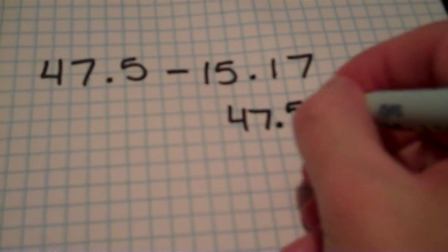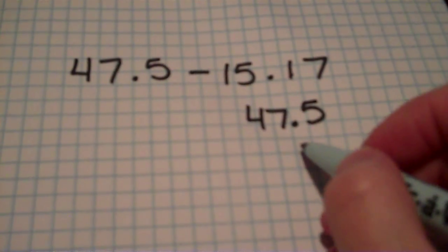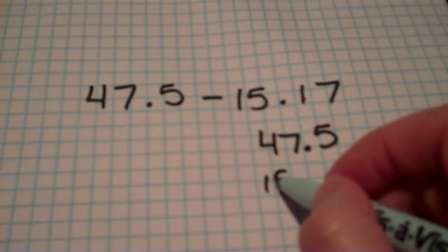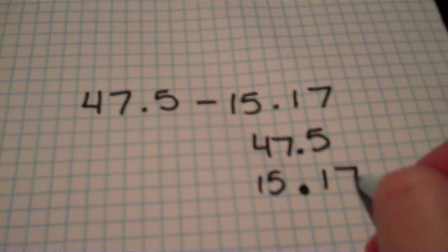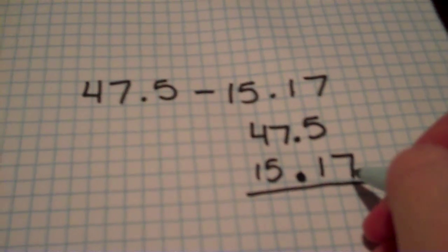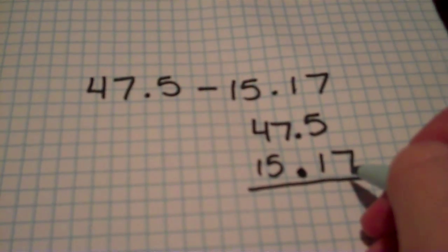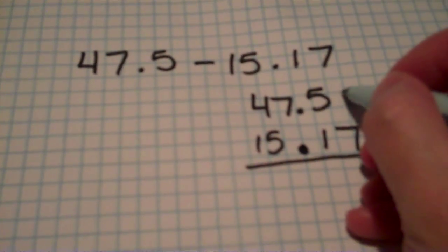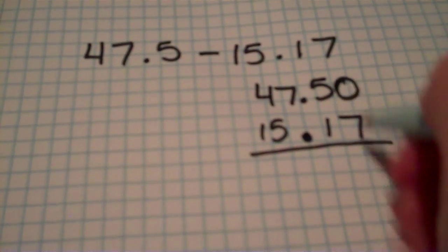47 and 5 tenths. Remember, we're going to line up the decimal points. So my decimal point has to be under this one. I've got 15 and 17 hundredths. So I don't have anything over that 7. What did I say I needed to do? If I go back, it says that I need to add a zero. So I'm going to put a placeholder zero here.